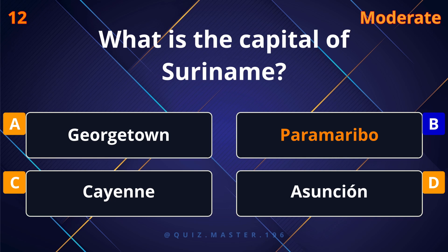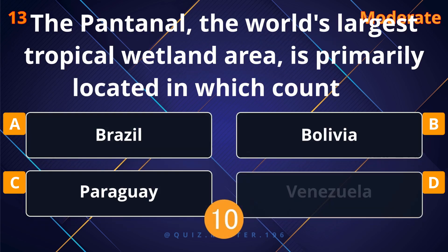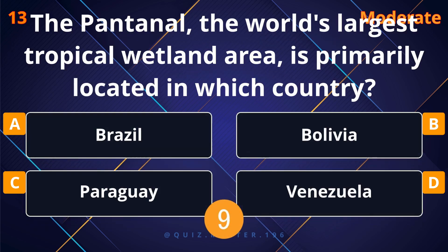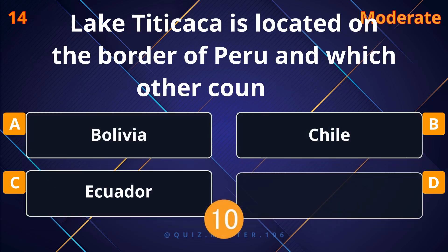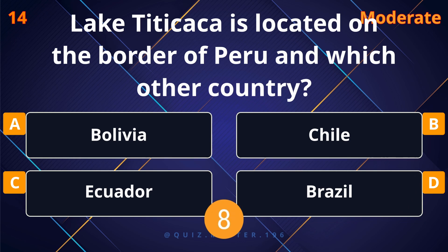Bolivia. What is the capital of Suriname? Paramaribo. The Pantanal, the world's largest tropical wetland area, is primarily located in which country?